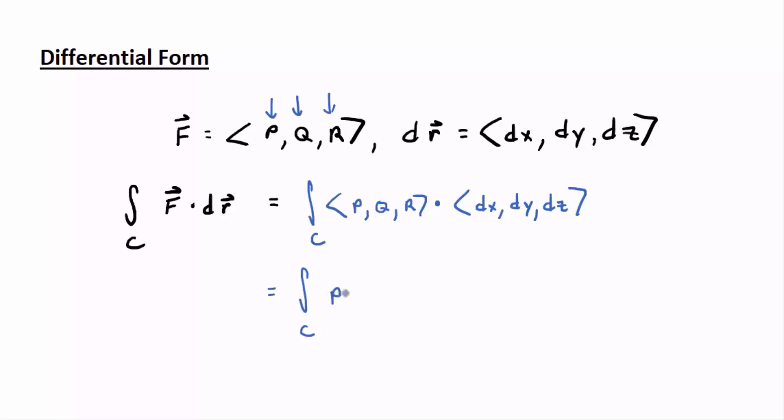p dx plus q dy plus r dz. Think of it as taking the dot product: p times dx, q times dy, r times dz, adding them together.